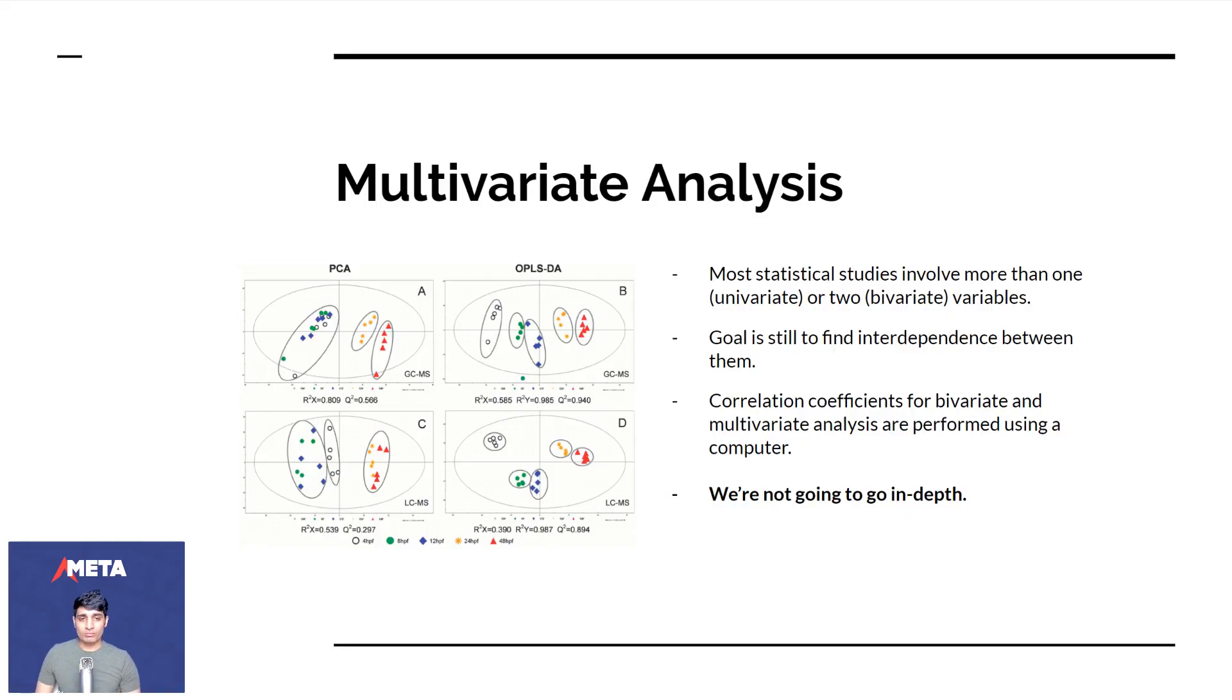Most statistical studies involve more than one or two variables. So far, we've been talking about two variables, like what's the correlation between height and weight? The goal is still to find interdependence between them. Even if you have three variables or four variables, you can actually find interdependence between all three or four of them. Many different things can be correlated.